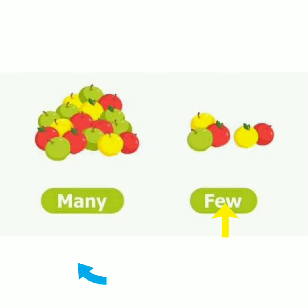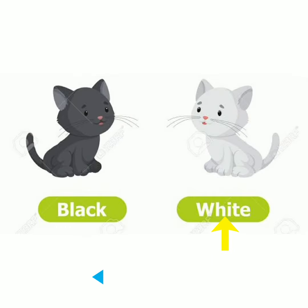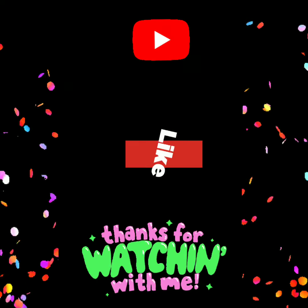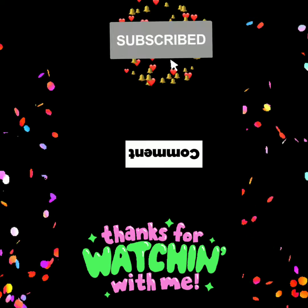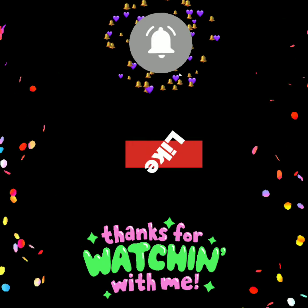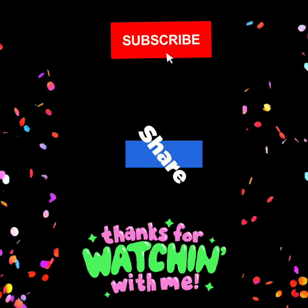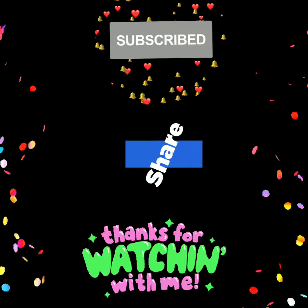Next is same and different — yani ek jaisa or alag. Next is black and white — yani kala or safed. Although there are so many other opposite words, we have taken few of them. So I hope you understand. Thank you.